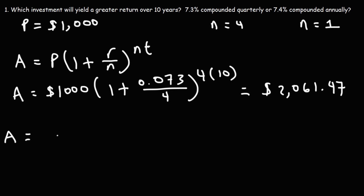Now, for the second situation, we're going to have the same initial investment of $1,000. R is going to be 0.074 instead of 0.073. It's compounded annually, so N is going to be 1. And this is NT, or 1 times 10.